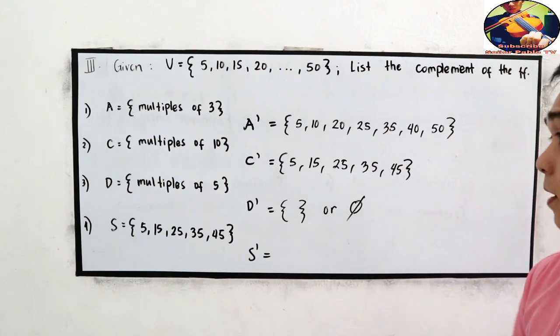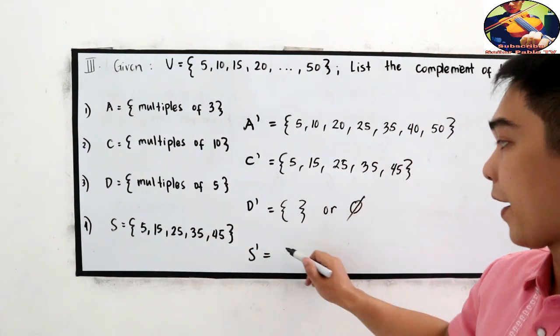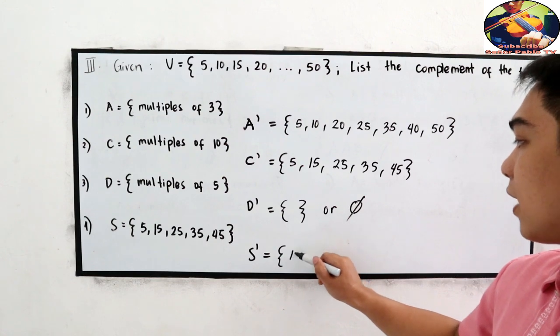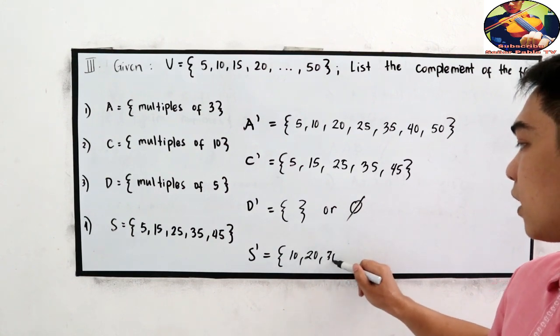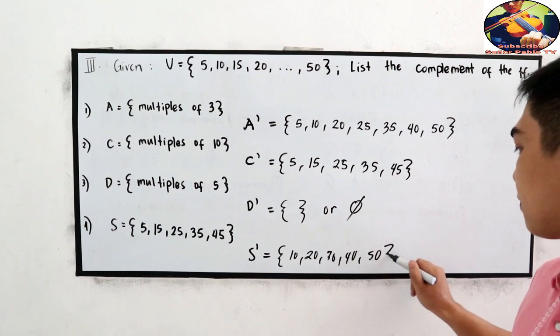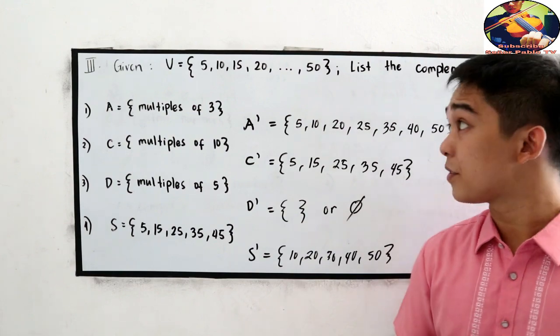Next, five, fifteen, twenty-five, thirty-five, forty-five. So our S prime are ten, twenty, thirty, forty, and fifty. So that is the complement of a set.